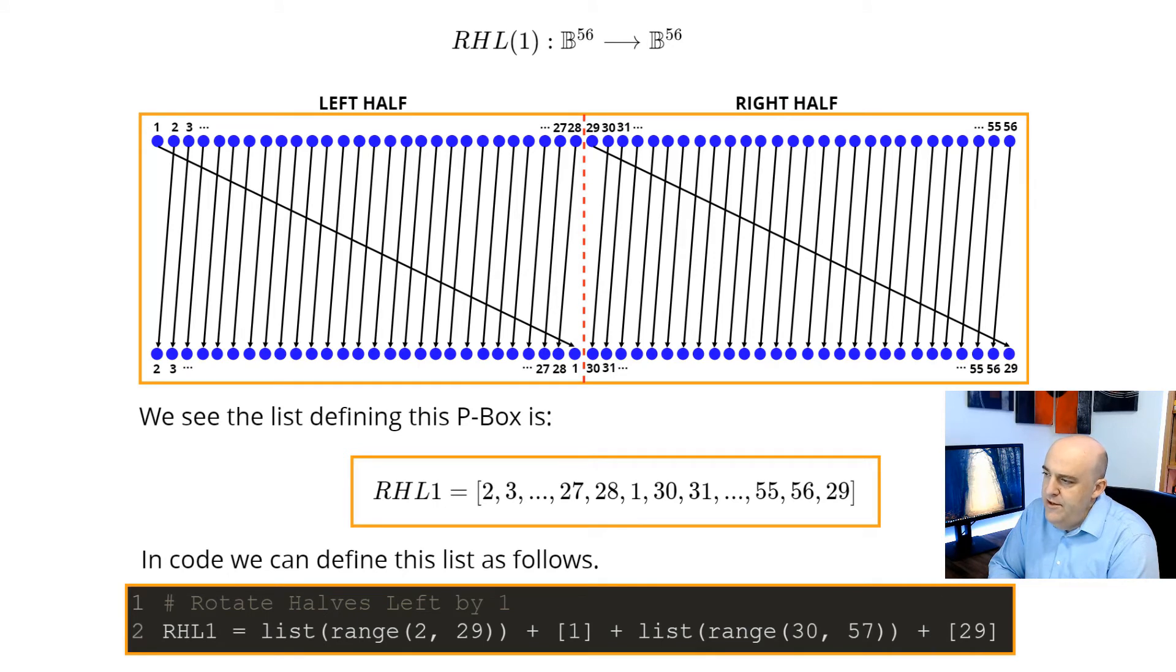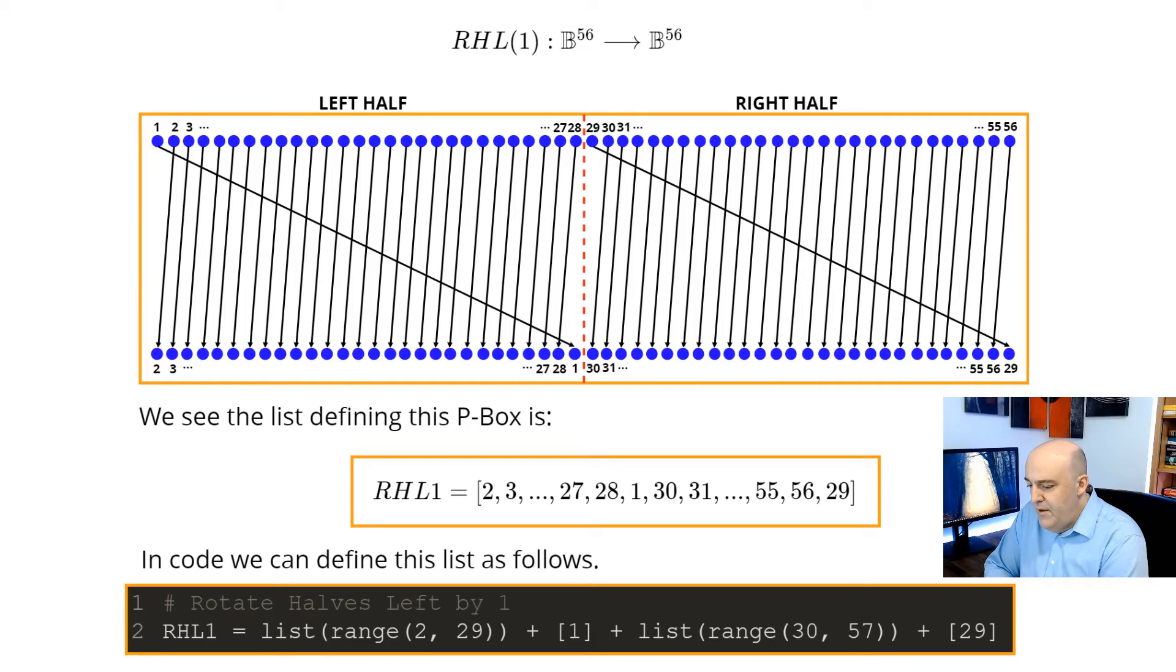So this is RHL1. We take our 56-bit input, imagine it into two halves, each are 28 bits each. The left half and the right half. And then we just rotate the bits on each half like that. We can see that the list corresponding to this P-box is given in this manner. We can implement that in Python using the range function and then casting it to a list. The plus sign there in Python just means we're adjoining those lists.